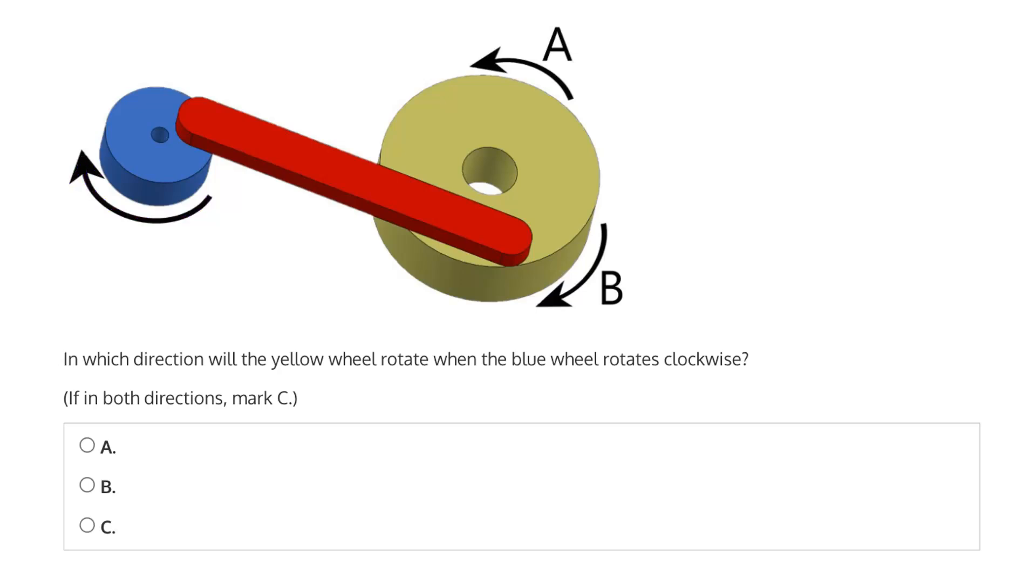At the beginning of its motion, when the blue wheel begins to rotate, the connecting link that's fixed to the blue wheel will reach this position. During this time, this end of the connecting link will be pushed to the right, and therefore the yellow wheel will rotate counterclockwise.